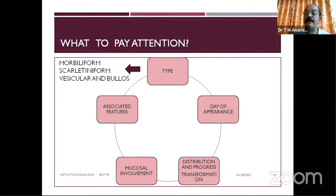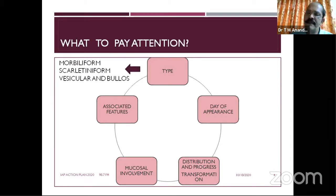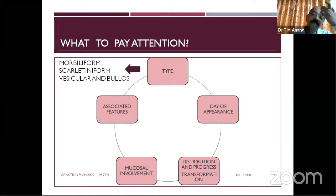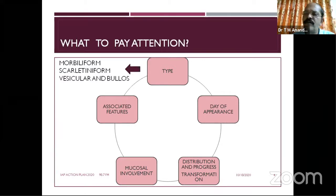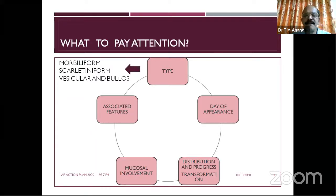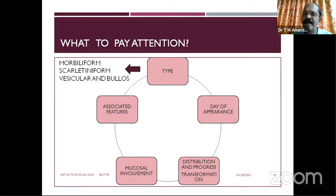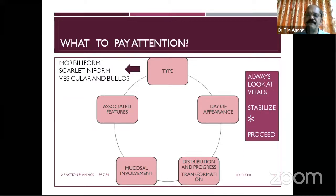The associated features and mucosal involvement are also very important. For example, Stevens-Johnson syndrome involves mucosa; SLE may give painless oral ulcers. The distribution and progression of rash matters: measles appears first on the face, chickenpox has centripetal distribution, HSP has lower limb distribution. The day of appearance is classically described — first day, second day, etc. — though this may vary with antibiotic use.